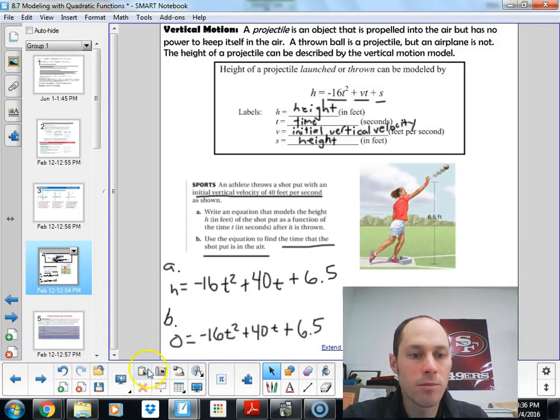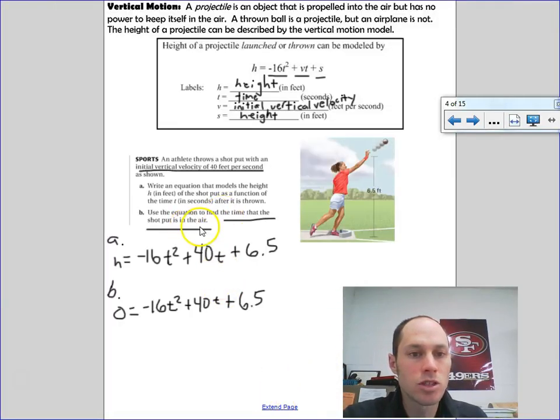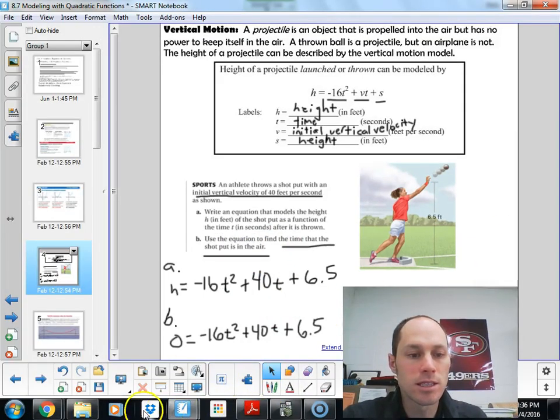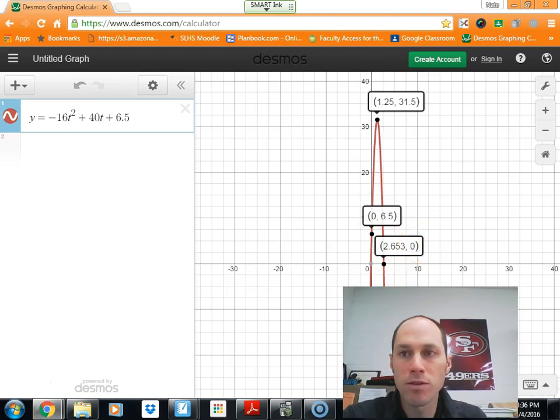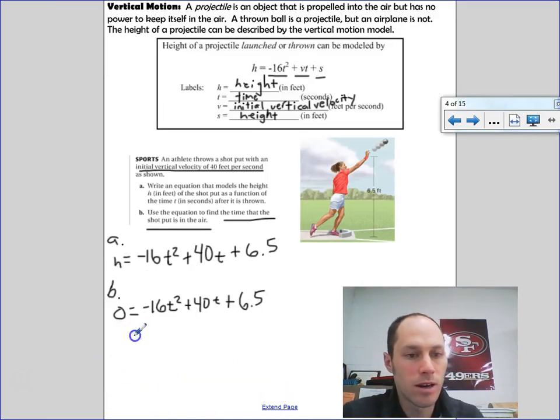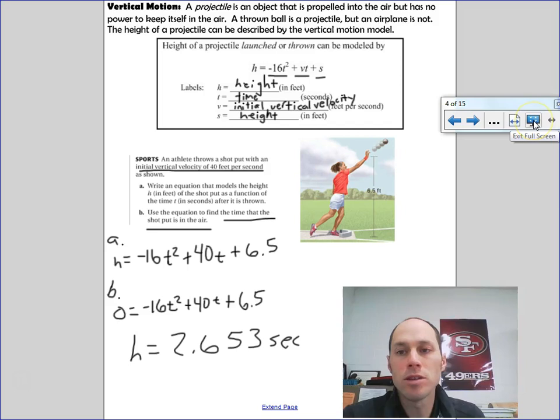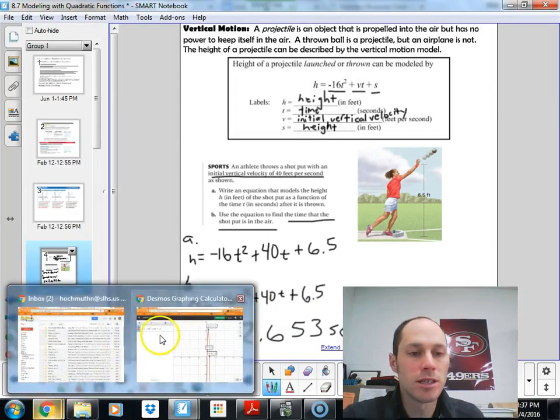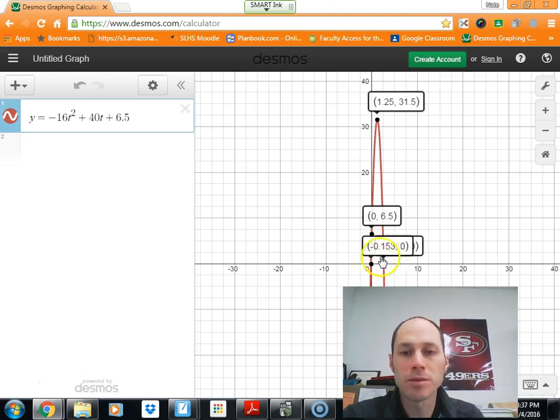And it reaches the ground at 2.653 seconds when its height is 0. So using my graph, I can model that equation and figure out that the shot put is in the air for 2.653 seconds. As long as we interpret our graph correctly. You would get the same thing if you used the quadratic formula. Keep in mind, if you use the quadratic formula, you would get two solutions because there are two x-intercepts. You'd get a negative value because it crosses at two spots, but we're not interested in that one because that would be if we went back in time, which we can't. We're starting here, throws the shot put up, and it lands back at 2.653.